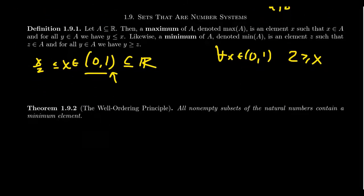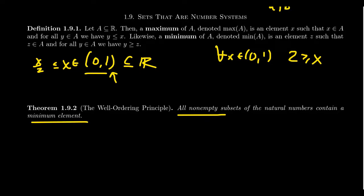With that clarification, we can talk about the well-ordering principle. The well-ordering principle tells us that all non-empty subsets of the natural numbers always contain a minimum element. This is very curious because the open interval 0 to 1 didn't contain a minimum element — you want it to be 0, but it doesn't belong to the set. But for natural numbers, every set of natural numbers will always have a minimum element. There's no guarantee it has a maximum, but it always has a minimum.